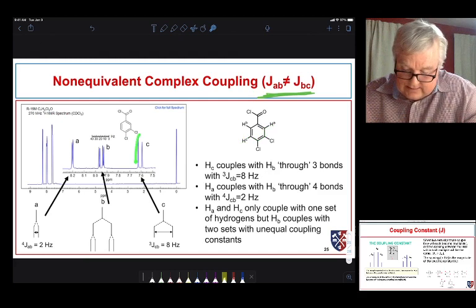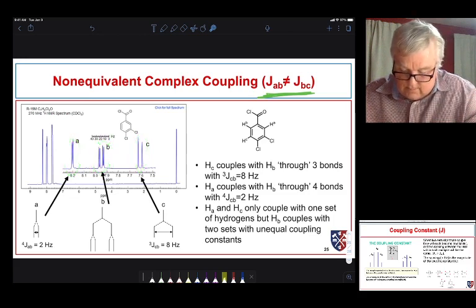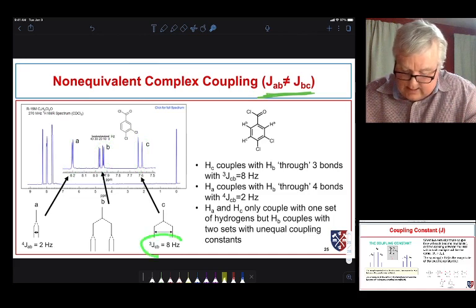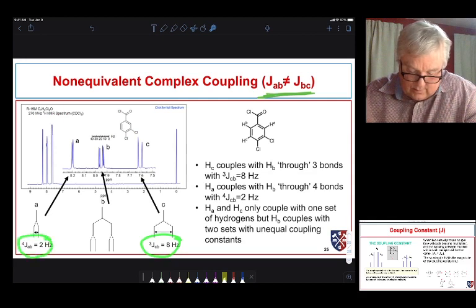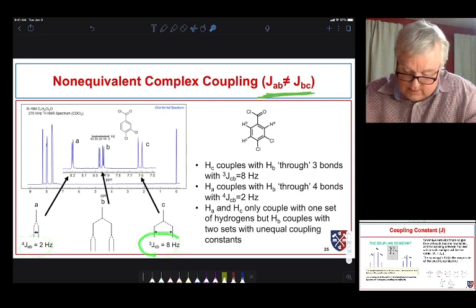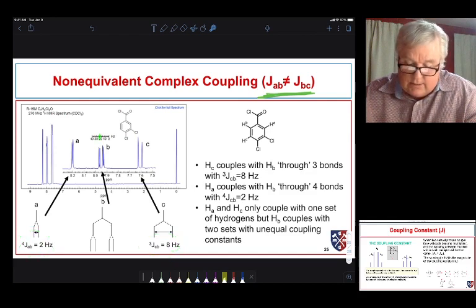So, we see this instance of the large coupling constant and the small. And over here, JBC, we have, remember, it's coupled with molecule C and it also couples with, I'm sorry, not molecule C, but protons C and protons A. So, we see a nice doublet of doublets.